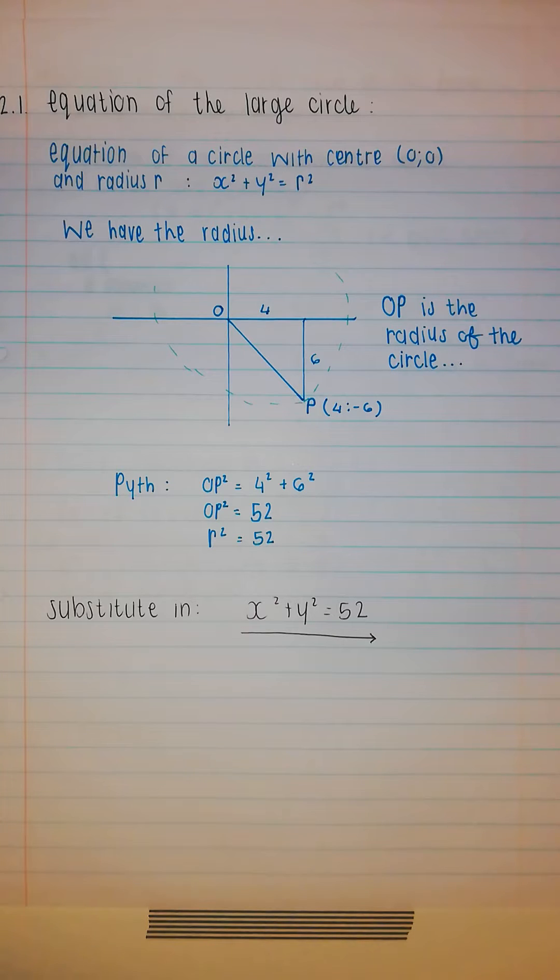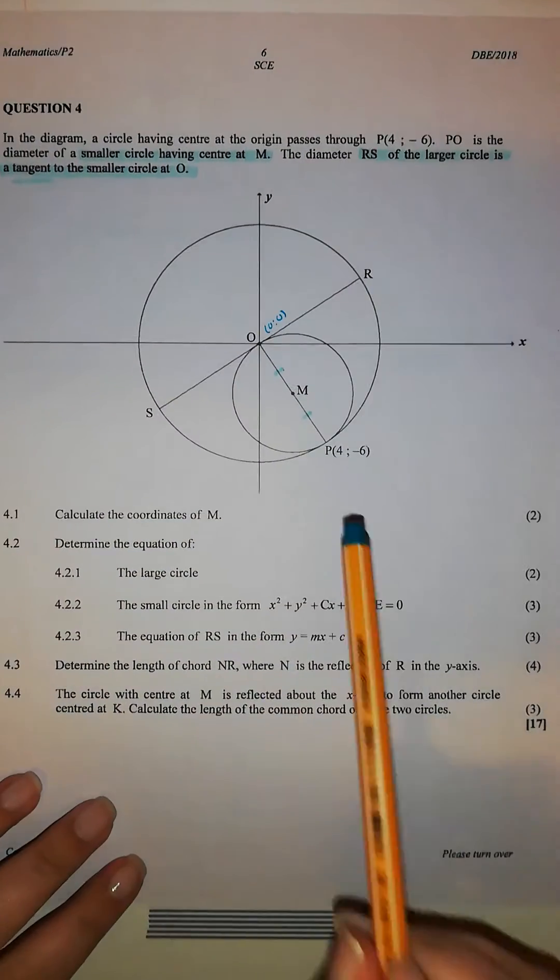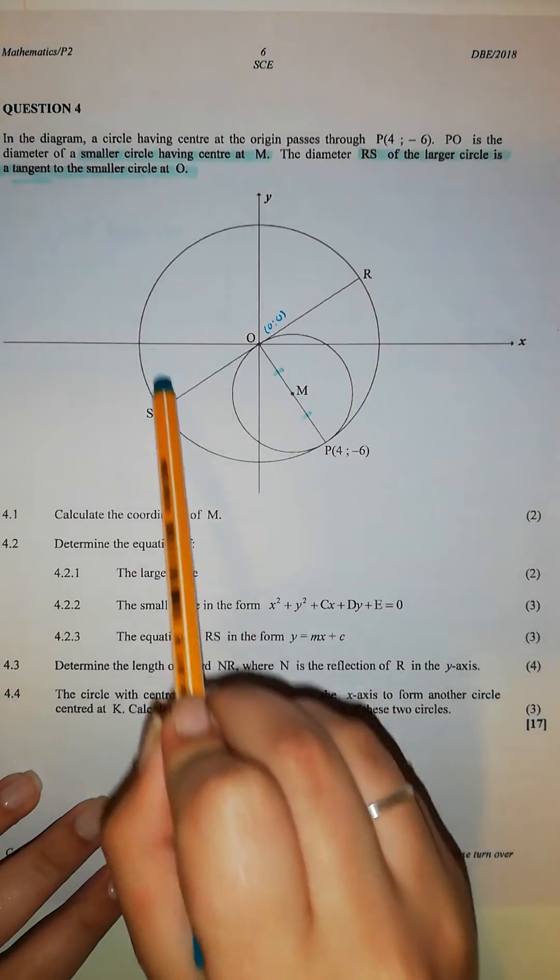So 4.2, they ask a few questions to determine the equation of, and the first one is determine the equation of the large circle. So now they're asking what is this big circle's equation.